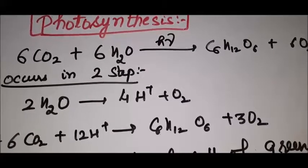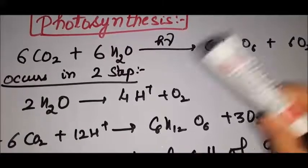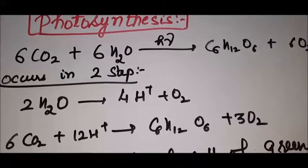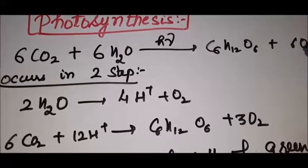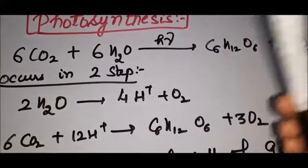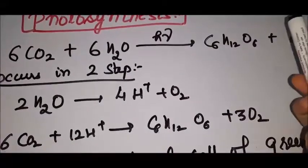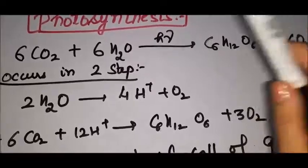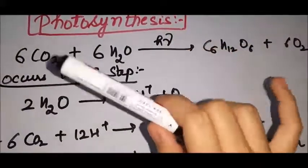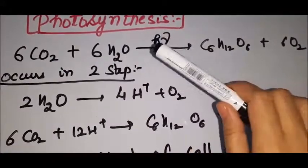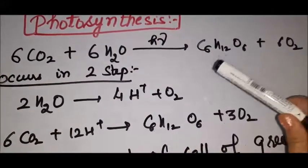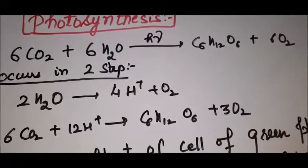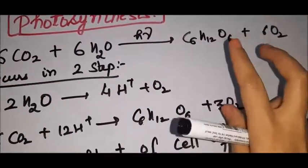The next topic is photosynthesis. For bioscience or MSc students, you may not have studied this before. Photosynthesis is the process where plants use sunlight to produce carbohydrates. The overall reaction is: 6CO2 plus 6H2O gives, in the presence of sunlight, C6H12O6 (carbohydrate) plus 6O2.